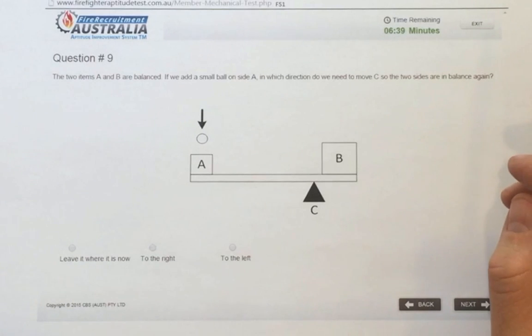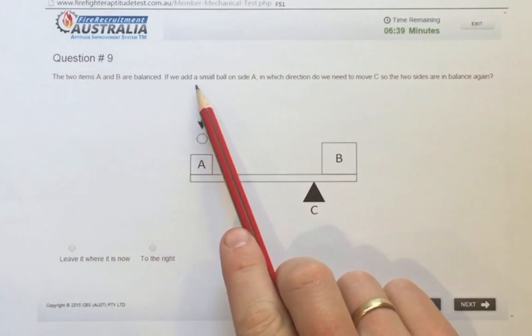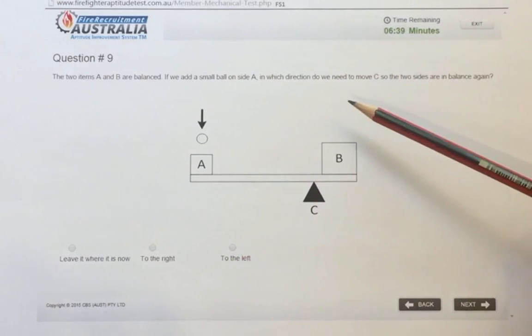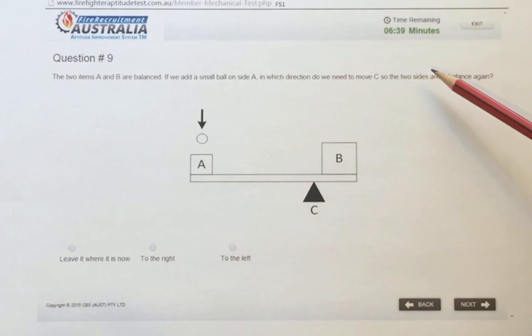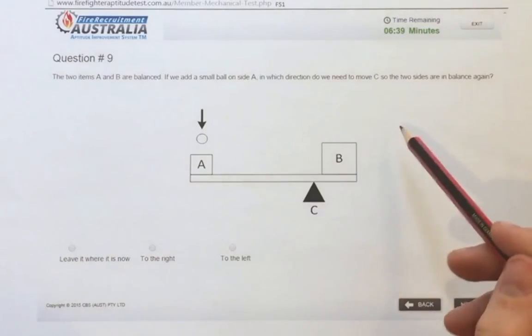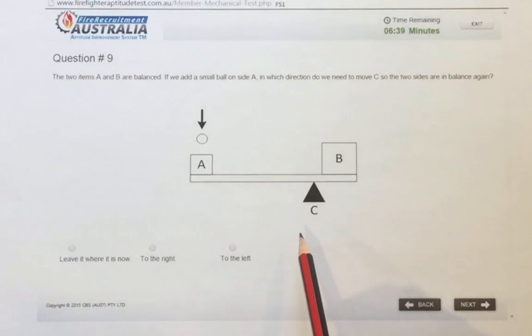Okay, question nine. The two items A and B are balanced. If we add a small ball on side A, in which direction do we need to move C so that the two sides are in balance again? So if that's currently balanced, A and B with C down there,